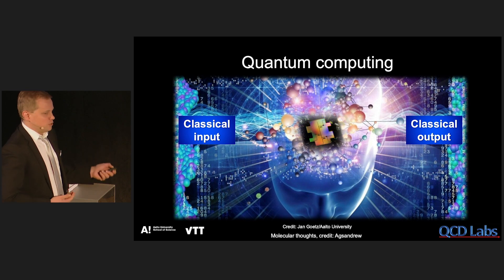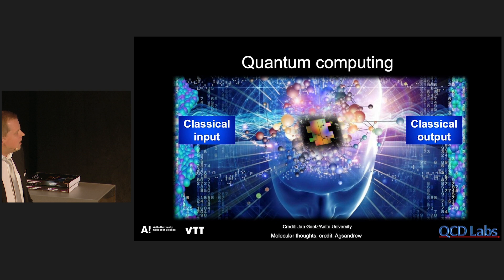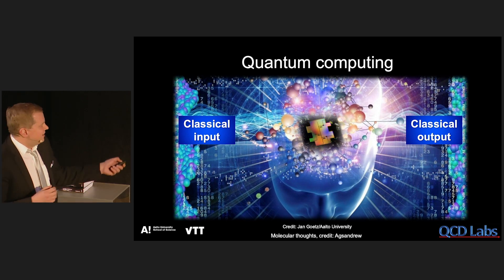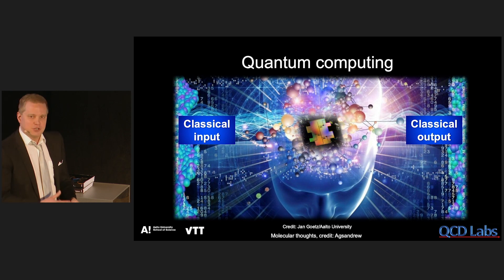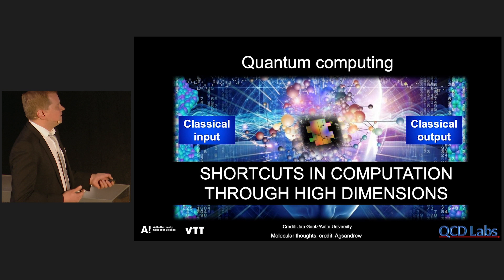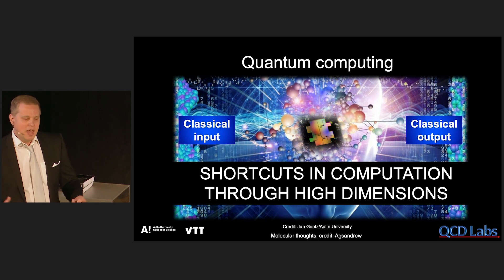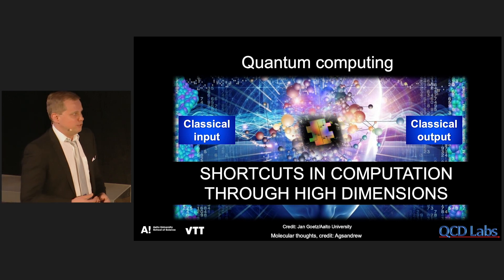It could, for example, happen inside a superconducting chip like this, which we have also fabricated. The point in a quantum computer is not that the processor ticks faster than the classical processor. In fact, each operation is much slower than a classical processor. But because of the quantum degrees of freedom — this high-dimensional space you have access to — you can take shortcuts in the computation, so you need much fewer computational steps than in a classical computer.